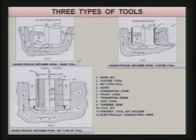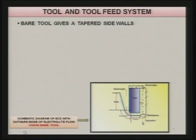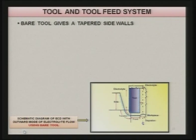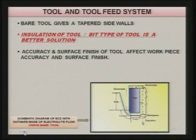The bit is joined together with a nut and screw arrangement. The bit of the tool is made of electrically conducting material, and you can coat the sides to reduce overcut. The tool bit holder is made of perspex, and electrically conducting wires provide the connection to the positive or negative terminal of the power supply. Accuracy and surface finish of the tool affect work piece accuracy and surface finish — whatever surface finish and tolerances are on the tool are reflected on the work piece.